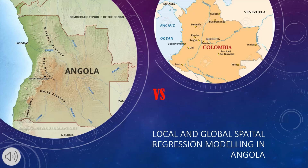The OLS results were significant, with temperature and precipitation having a positive relationship with species richness, while topographic variation had a negative relationship. Compared to the study done in Angola, the Colombian study differs where temperature is shown to have a negative relationship with species richness instead of topographic variation.